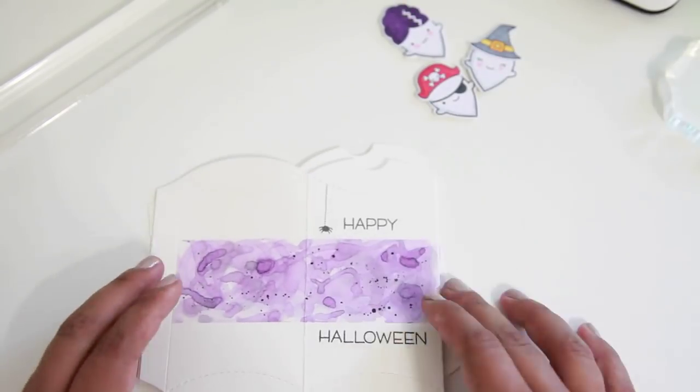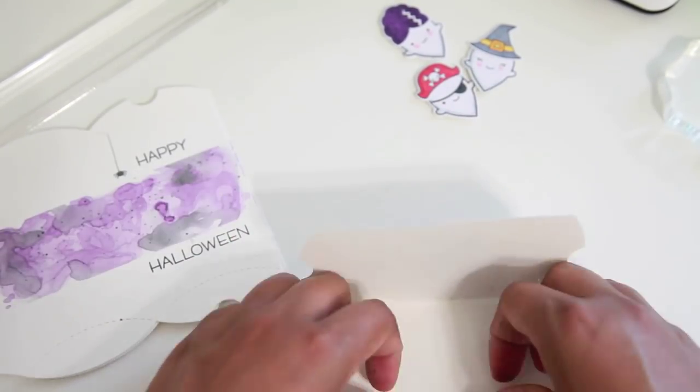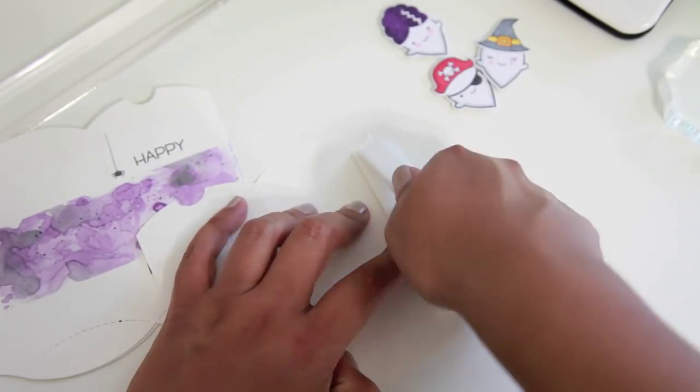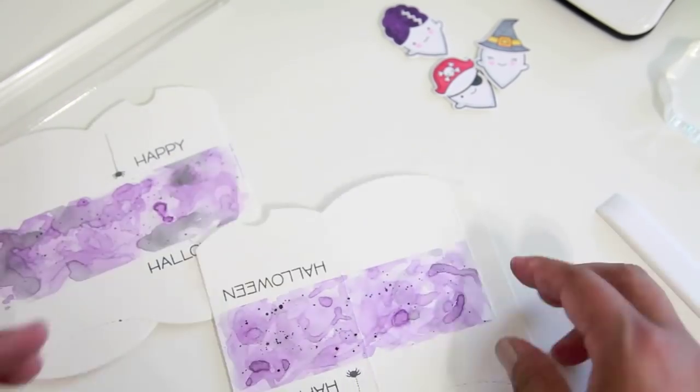Okay, now that the stamping is all done, I'm going to go ahead and start assembly. So first I'm going to go ahead and just adhere them all together. And then I'm going to add the images on after.